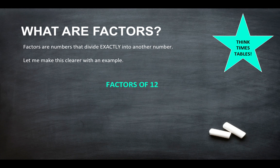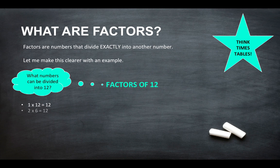So let me make this clearer with an example. So the factors of 12. So you need to find all the numbers that can be divided into 12. So we've got 1 times 12 is 12, 2 times 6 is 12, 3 times 4 is 12.